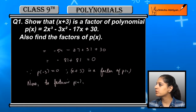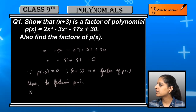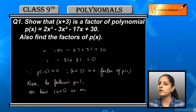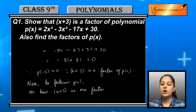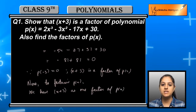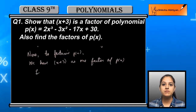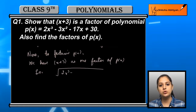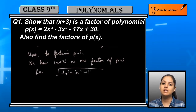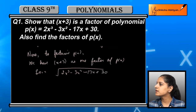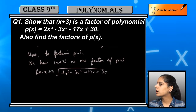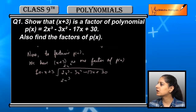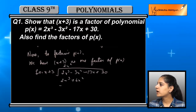Now second part of the question: अगर x plus 3 factor है तो हमें उसे factorize करना है। To factorize p(x), x plus 3 एक factor तो हमारे पास आ गया है। अगर हमें further factorize करना है तो हम x plus 3 से p(x) को divide करेंगे। p(x) की degree 3 है — 2x³ — तो 3 factors आएंगे। First factor is x plus 3. So अगर हम long division method से divide करें।